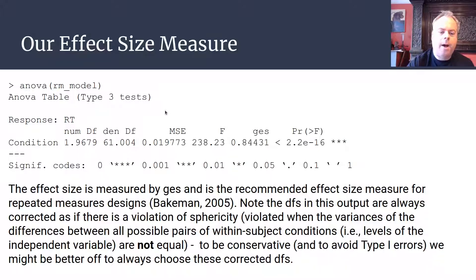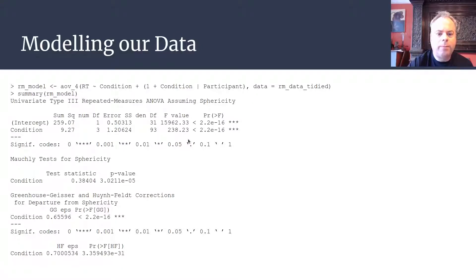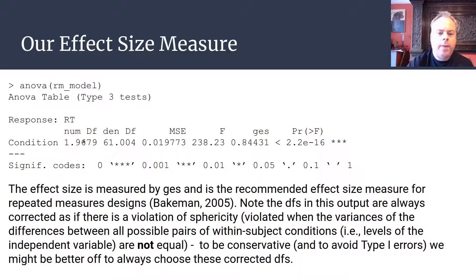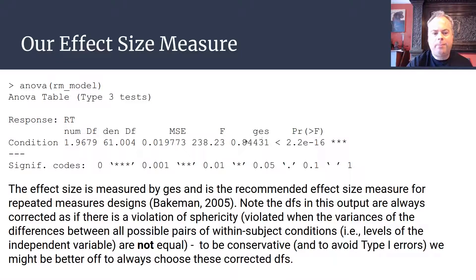In addition to the summary function, we can use the anova function in R to get the ANOVA output. Here we actually get corrected degrees of freedom because Mauchly's test was significant. The raw degrees of freedom would be 3 and 93, but the adjusted degrees of freedom are 1.9679 and 61.004 — an adjustment applied due to the violation of sphericity. Otherwise things are as expected: an F value of 238, a generalized eta squared effect size measure, and a very small p-value.